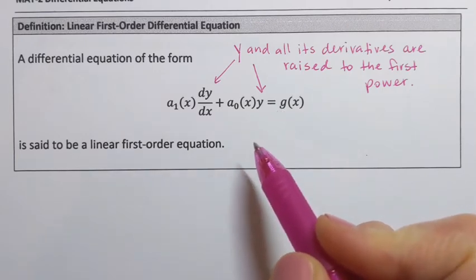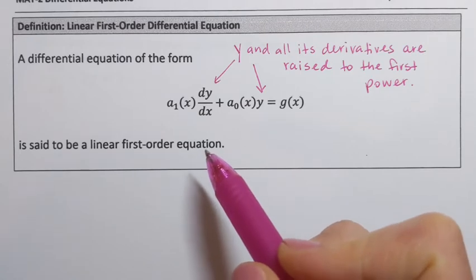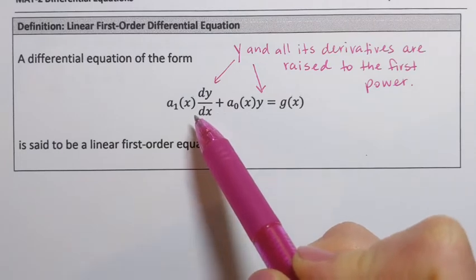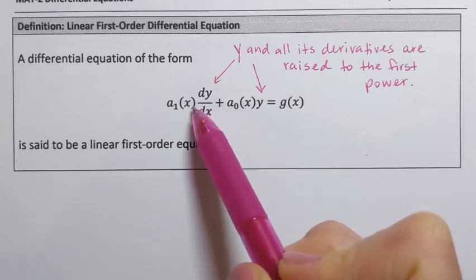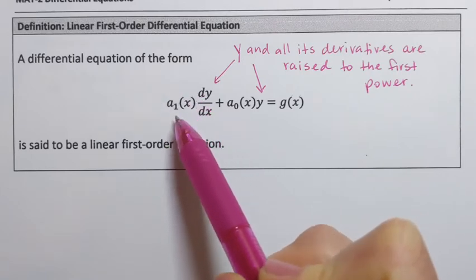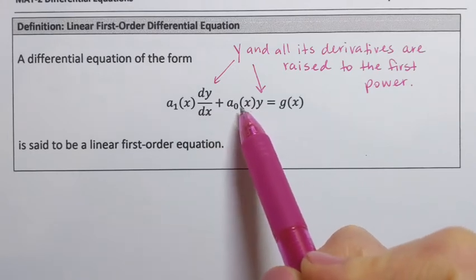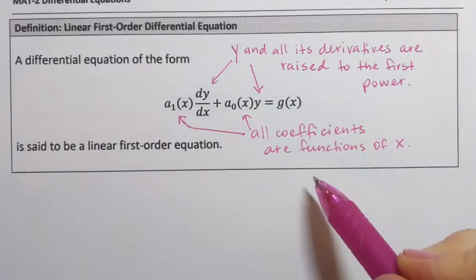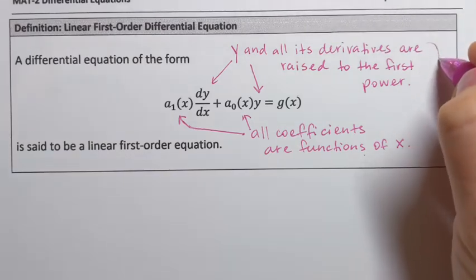The second condition is that all coefficients should be functions of x, the independent variable. The coefficients in a differential equation are everything written in front of y and all its derivatives. In front of the first derivative we have a₁ of x, and in front of y we have a₀ of x — both are functions of x. This is what makes a differential equation a linear differential equation.